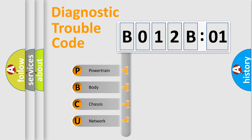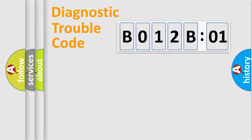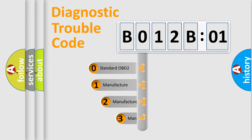We divide the electrical system of an automobile into four basic units: Powertrain, Body, Chassis, and Network. This distribution is defined in the first character code.